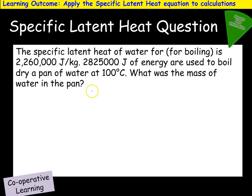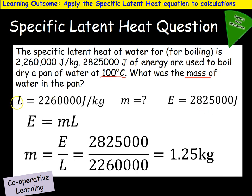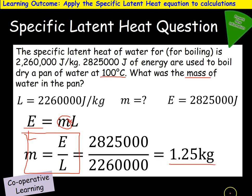A slightly trickier question: the specific latent heat for boiling is 2,260,000 joules per kilogram. 2,825 joules of energy are used to boil a pan of water completely dry at 100°C. What is the mass of the water? We underline the key parts, write down the key information, then rearrange the equation. We want mass, so: mass = energy ÷ latent heat = 2,825 ÷ 2,260,000 = 1.25 kilograms.